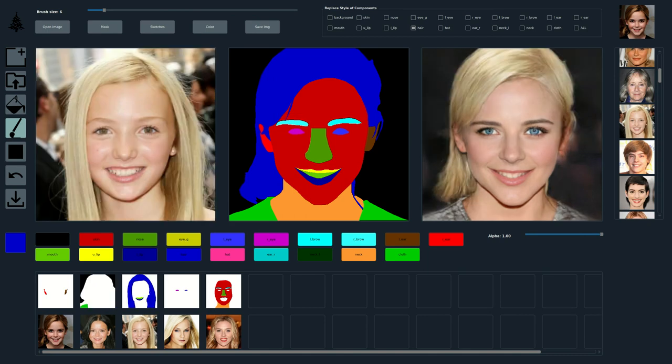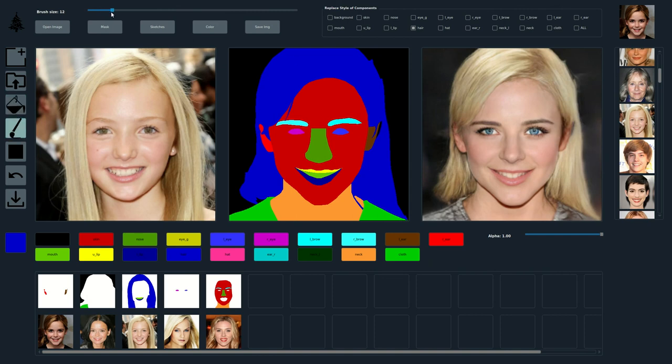We can also modify the final result by painting changes to the segmentation mask. For example, we can extend the hair region to the right and then paint hair bangs on the forehead.